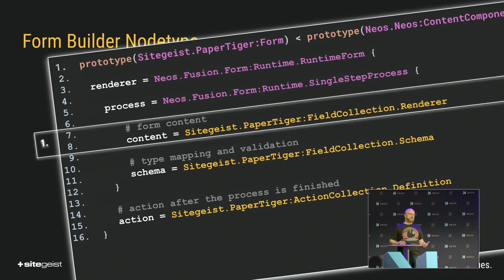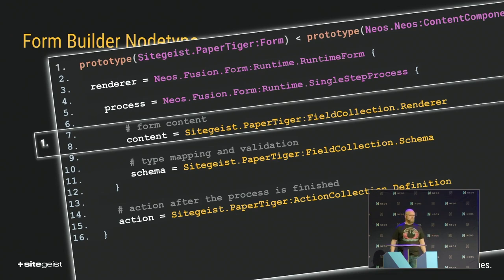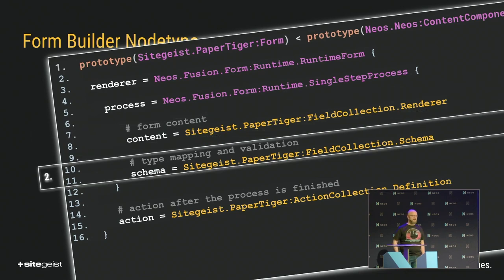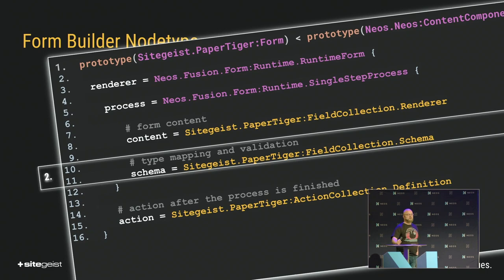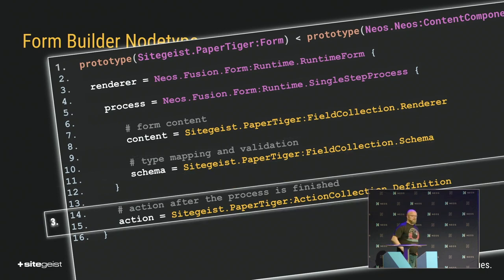The things that were replaced to create the PaperTiger form or dynamic form was the content, which is now a field collection renderer — it pretty much iterates over all contents in the field collection and triggers the flow renderer, very similar to the classic Neos content collection renderer. There is a schema, which is now a field collection schema. It looks for all nodes below the field collection that are of type field, which allows you to use grids and collections and stuff like that in there. So the schema will find everything below, regardless of what the structure of your nodes below the actual field collection is. Last thing: the action, which is now an action collection renderer that will iterate over all defined action nodes.